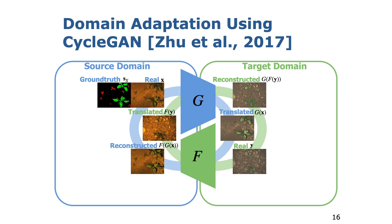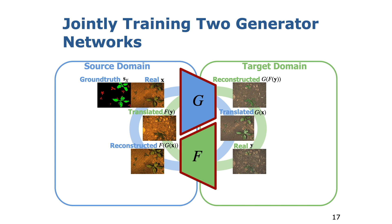Our domain adaptation approach is based on CycleGAN, which is an image-to-image translation technique introduced by Zhu et al. The domain adaptation approach learns the mapping between the source and the target domain in an unsupervised manner. We achieve this by jointly training two generator networks G and F using unpaired source and target images and pixel-wise source labels. They perform the translation of images into the style of the opposite domain. During the training of the GAN, their respective discriminators aim to distinguish between real and generated images. Technically, the discriminator networks can be seen as dynamically updated loss functions that train the generators to create fake images that are close to real images.